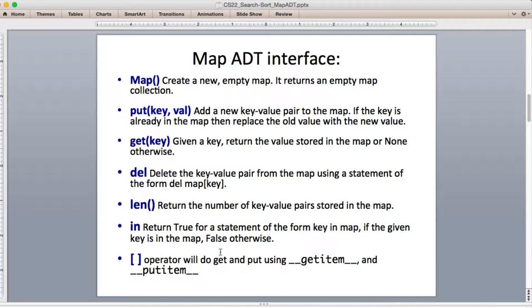The map ADT interface has a way to construct an object of type map, which will create an empty map. And then once you have a reference to that object, you can put a key value into it, or get a key value.